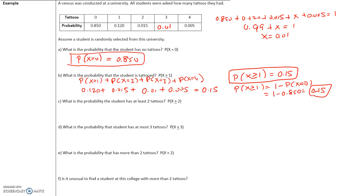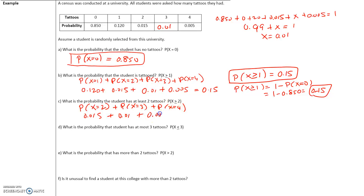Part C: What is the probability that the student has at least two tattoos? P(X ≥ 2) means the student can have 2, 3, or 4 tattoos. The probability of 2 tattoos is 0.015, 3 tattoos is 0.01, and 4 tattoos is 0.005. Adding these gives P(X ≥ 2) = 0.03.